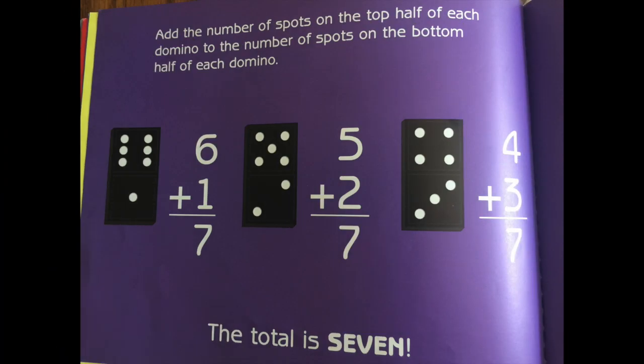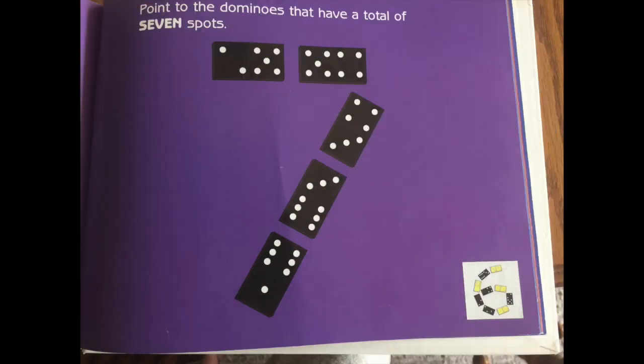Add the number of spots on the top half of each domino to the number of spots on the bottom half of each domino. Six plus one, seven. Five plus two, seven. Four plus three, seven. The total is seven. Find the dominoes that have a total of seven spots.